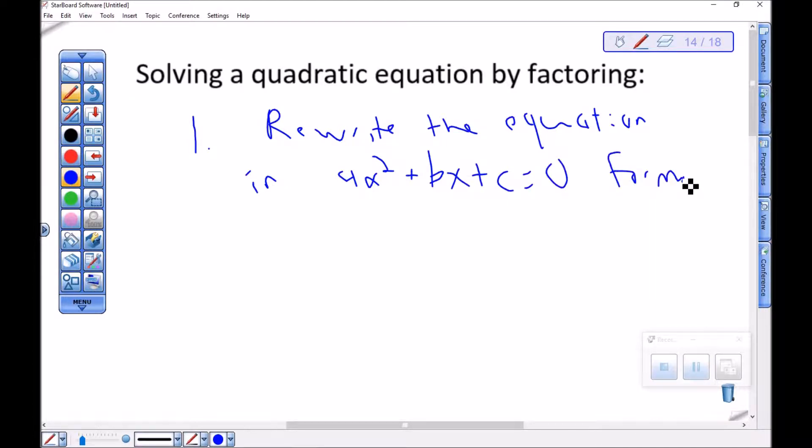We need to get it equal to 0 because we want to use that zero product principle once we're done factoring. So first, get one side equal to 0.